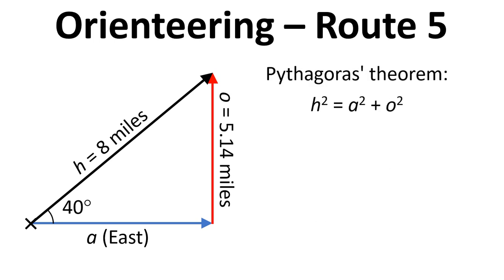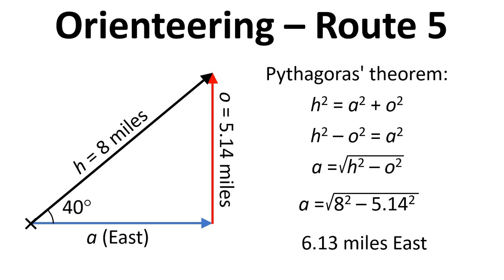So we could use Pythagoras because we know that h squared equals a squared plus o squared. And if we rearrange that by subtracting o squared from both sides, we can get a squared. Putting in the numbers gives us 6.13 miles east.